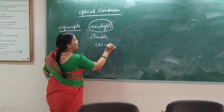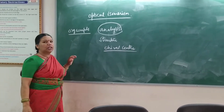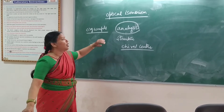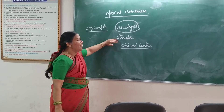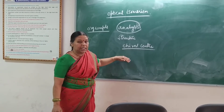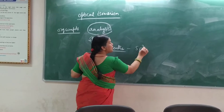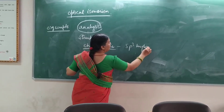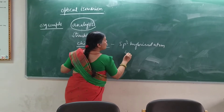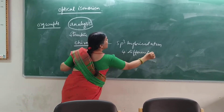All these compounds had a chiral center. What are we going to observe? All optically active compounds had a chiral center. What is the chiral center? The chiral center is a hybridized atom in which it is going to have four different groups attached to it.